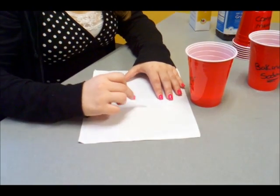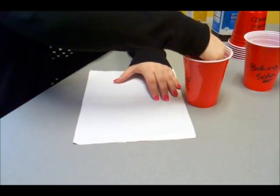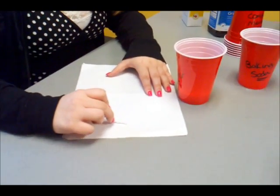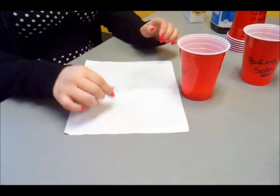The paper will absorb the water and hold the sodium bicarbonate, which is baking soda, in its fibers. Sodium bicarbonate is a weak base. And that's how this works as an invisible ink.